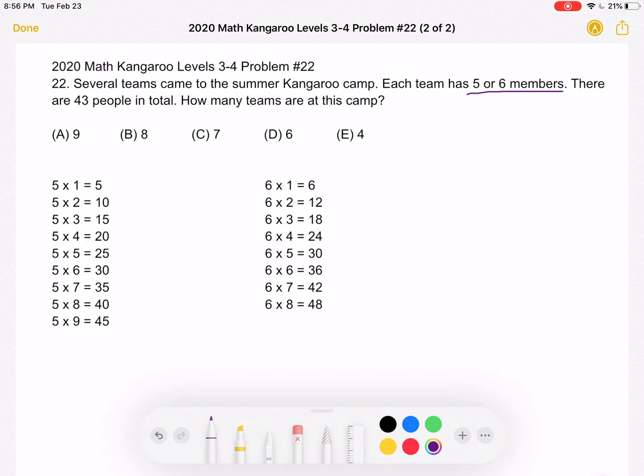another number of teams times 6 people per team will give us a total of 43 people in total. So let's try to figure out if we can see any patterns, starting with 5s.